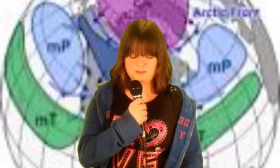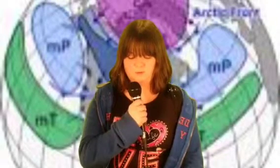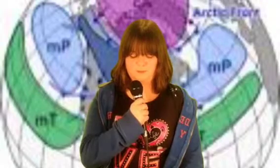The opposite of it is Continental Tropical. This air mass is hot, very dry, and unstable. It forms in the summer but it forms north. The last air mass is Continental Arctic. The weather it brings is really cold and also forms in the north.